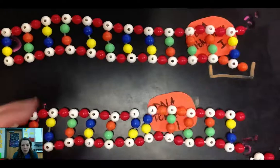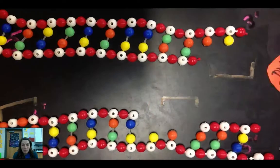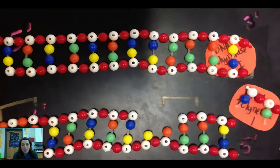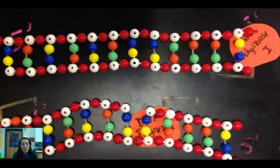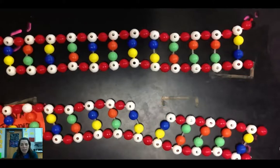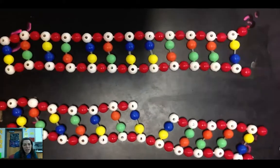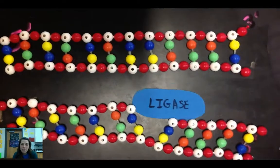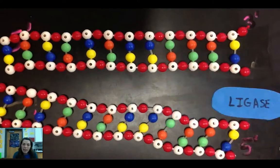Then my primers, which are RNA, need to be removed and replaced with DNA primers and that's done by DNA polymerase 1. That's going to leave me a gap between my Okazaki fragments on my lagging strand and I'm going to glue that gap together with ligase.